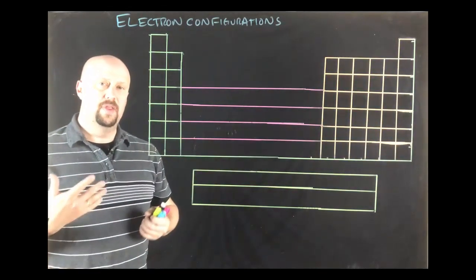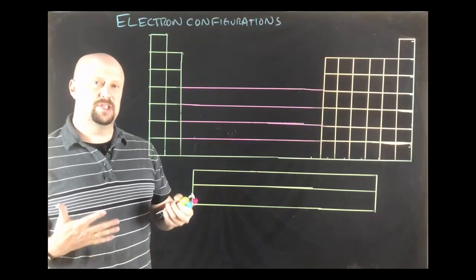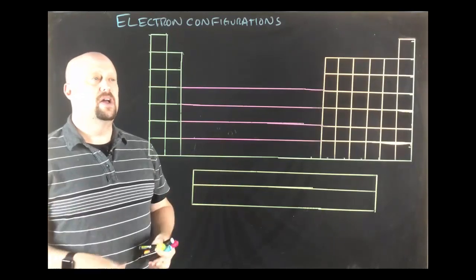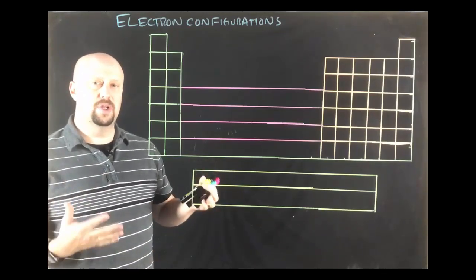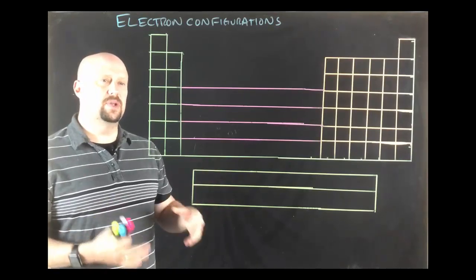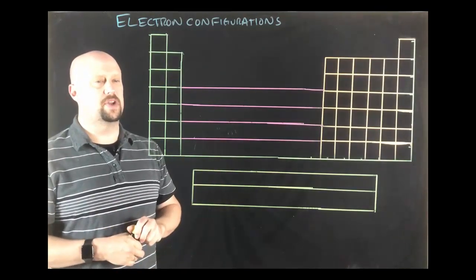And why is that? Well because they're called noble gases because essentially they don't react with anything else because they already have the electron configuration that they really need. So that's going to lead us into electron configurations. And we're going to talk about the three rules of electron configurations.